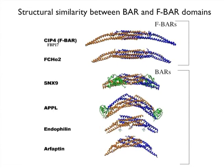Shortly after our paper appeared in Developmental Cell, similar findings were reported in an independent study by the Takenawa lab. Crystal structures of F-BAR domains revealed a striking similarity to classical BAR domains. F-BAR domains, however, were found to have a more shallow curvature, explaining why F-BAR domain-coated tubules have a larger diameter than tubules coated by classical BAR domains.